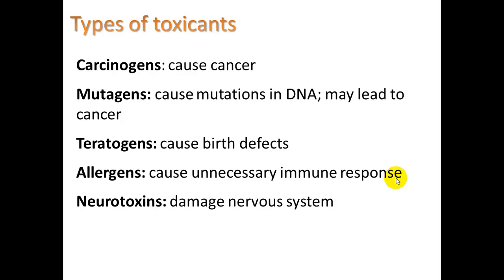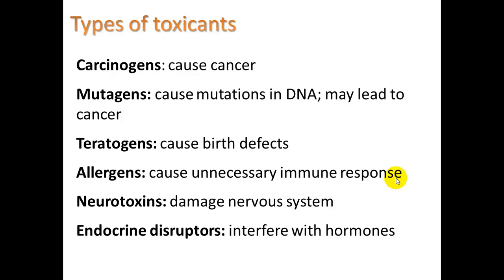Neurotoxins damage the nervous system — you can start to experience serious symptoms from mercury poisoning or lead poisoning. Endocrine disruptors interfere with hormones.